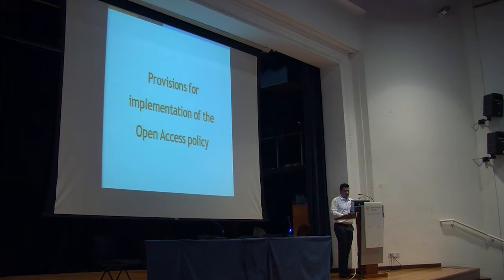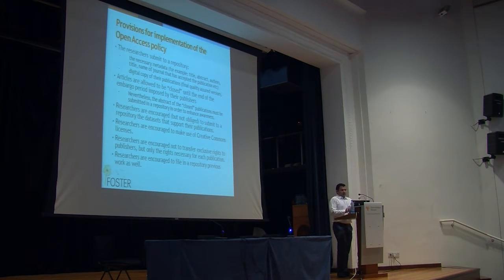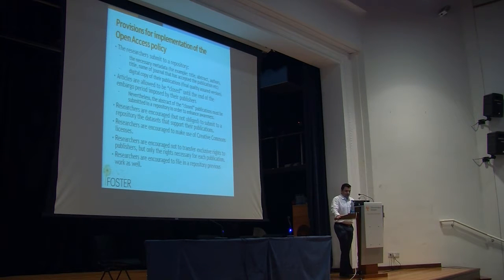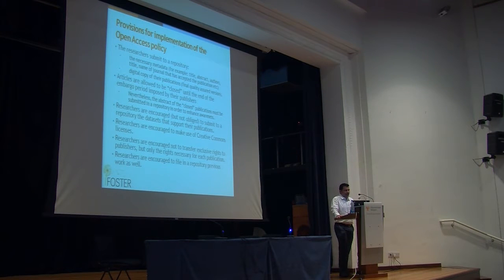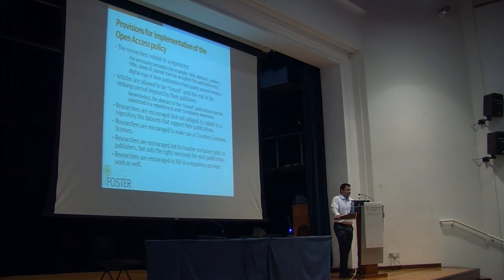The provisions for implementation require that researchers submit to a repository the necessary metadata — for example, title, abstract, author, author's affiliation, name of the journal that has accepted the publication — and a digital copy of the quality-assured version of that publication. Articles are allowed to remain closed until the end of the embargo period imposed by the publishers. We will not follow the six-month and twelve-month embargo of Horizon 2020; we're going to leave it open to the publisher's embargo period for now.